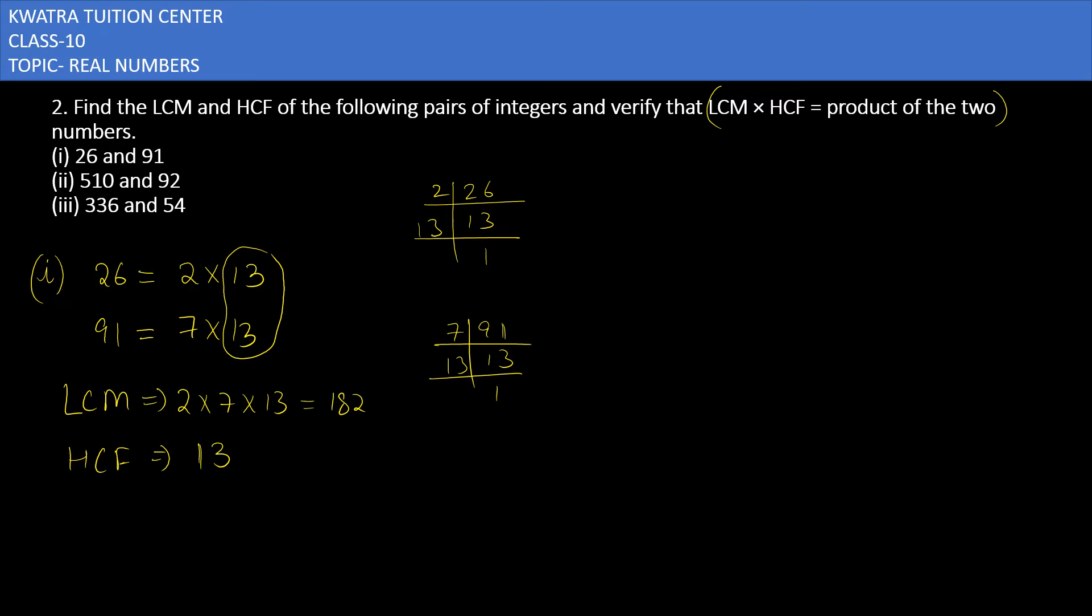Now we have to verify the left side and right side. Let me write down the formula: it is product of two numbers. First of all, LCM is 182, HCF is 13.